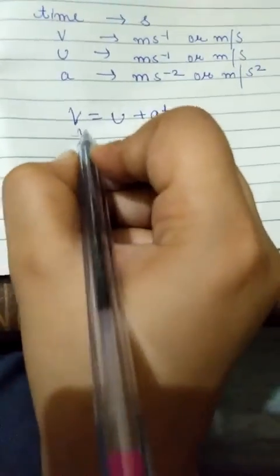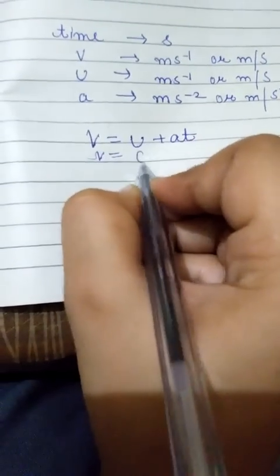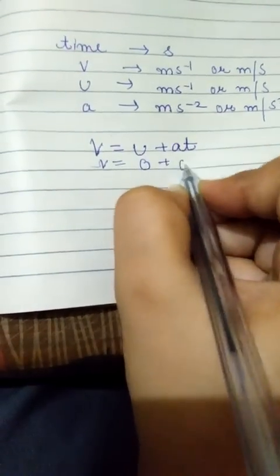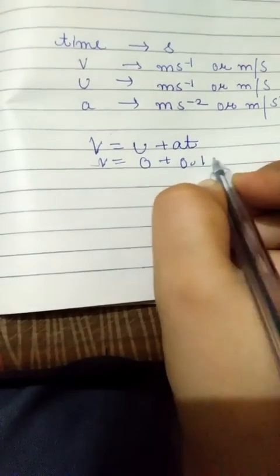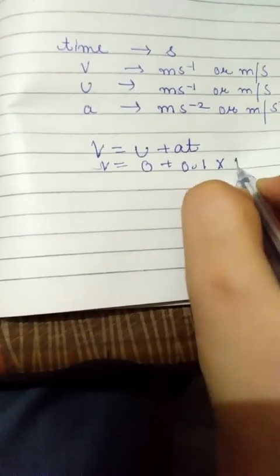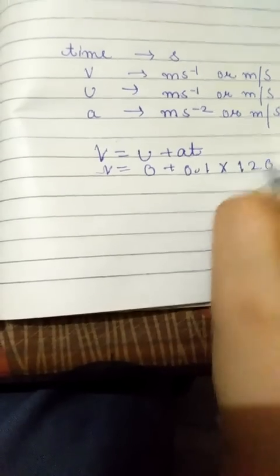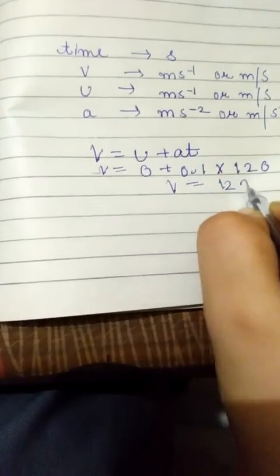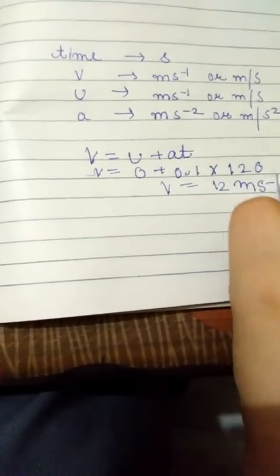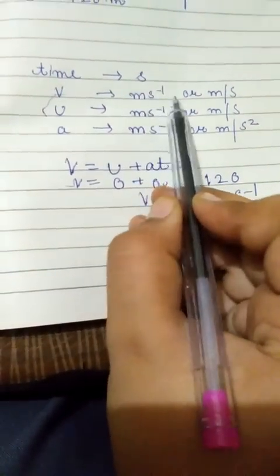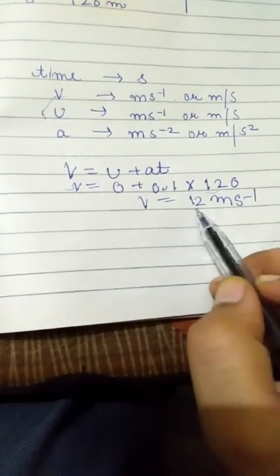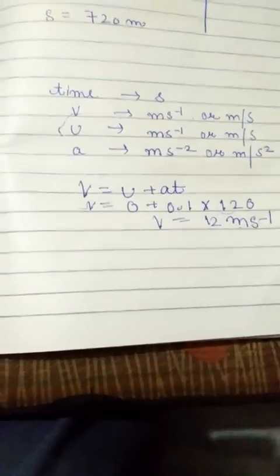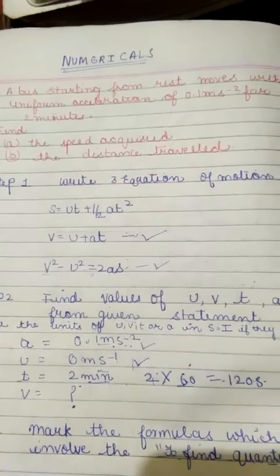v is equal to u plus at. v is equal to u is 0, a is 0.1, and t is 120. What we get? v is equal to 12 meter per second. Unit of v is meter per second. So we write here 12 meter per second.